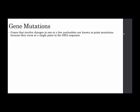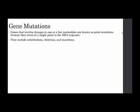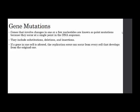Gene mutations involve changes in one or a few nucleotides. They're known as point mutations because they occur at a single point in the DNA sequence. The nucleotides are the bases — the A, C, G, T in DNA, or A, C, G, U in RNA. They include substitutions, deletions, and insertions. If a gene in one cell is altered, the replication error can occur in every cell that develops from that original one.